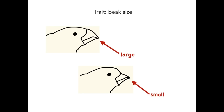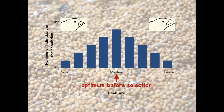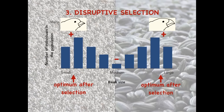As an example of disruptive selection, we can look at Darwin's finches on the Galapagos Islands. Pre-selection finches had a mean beak size that enabled them to eat medium-sized seeds. During the selection process, strong interspecific competition for the medium-sized seeds made it a disadvantage to rely on those medium-sized seeds, and an advantage to be able to eat small or large seeds instead. As a result, the post-selection distribution is bimodal, showing a population with many members having a smaller beak and many members having a larger beak, and fewer having a medium-sized beak.